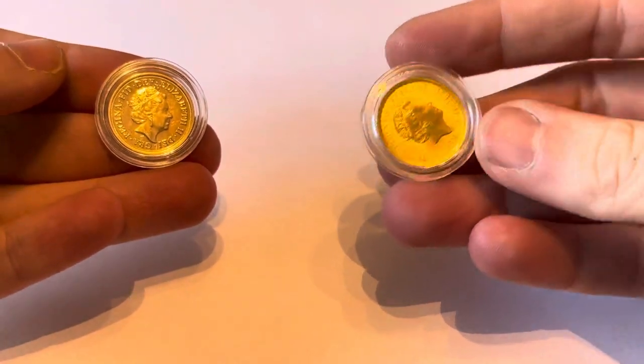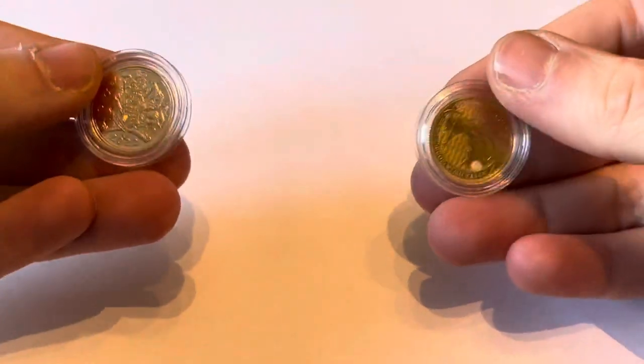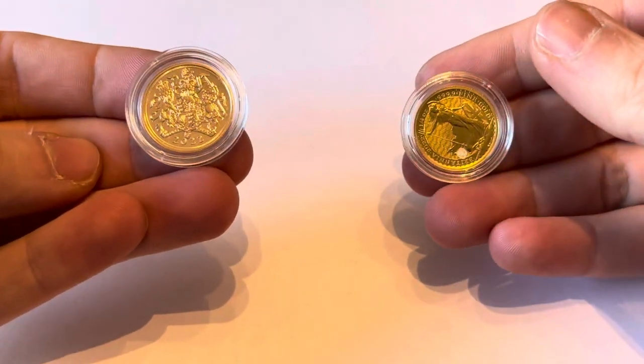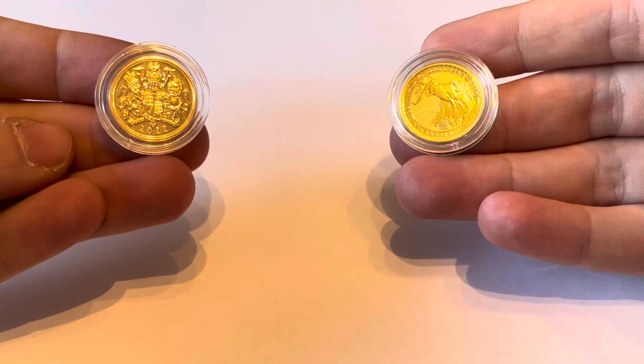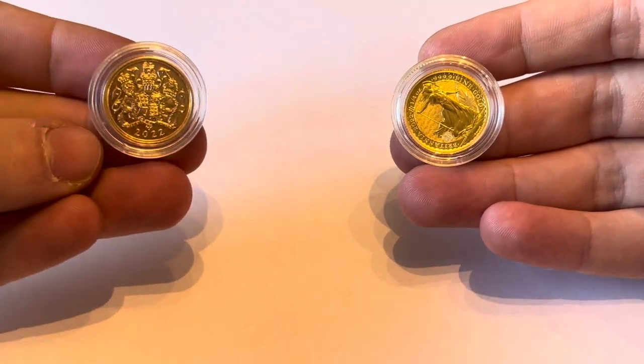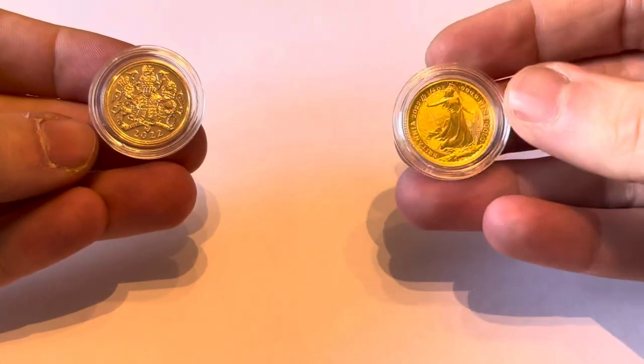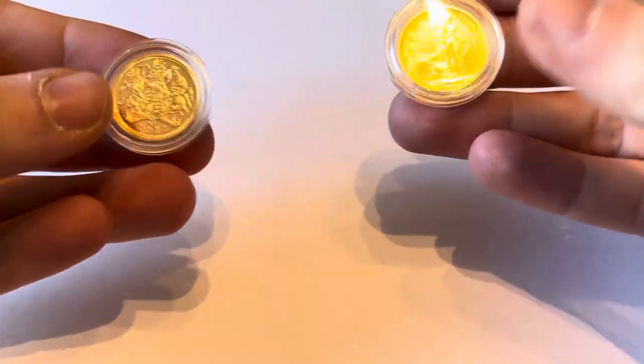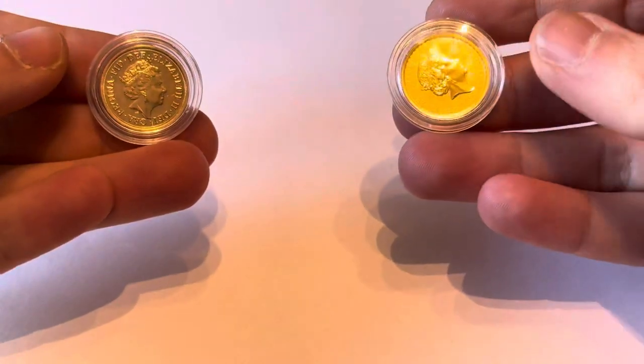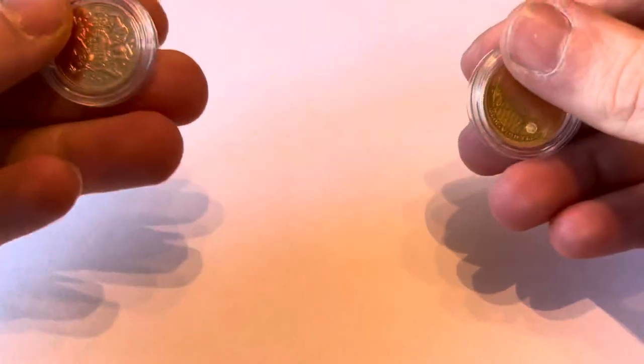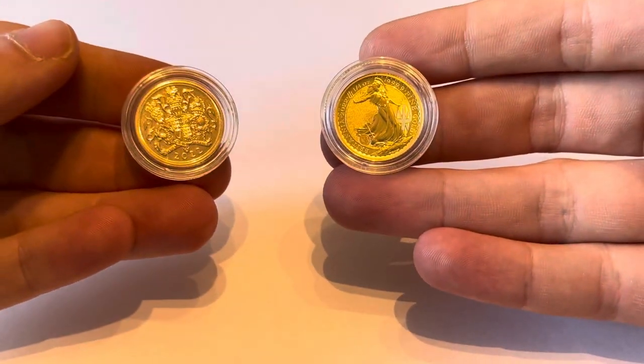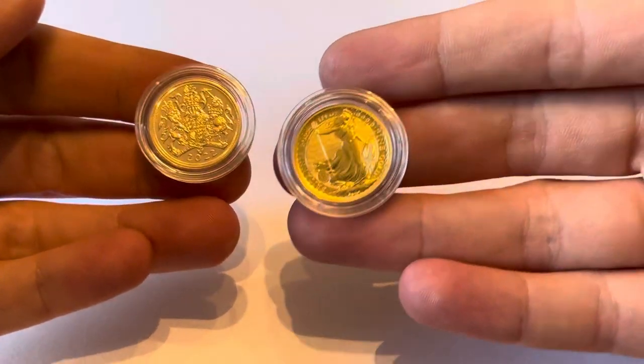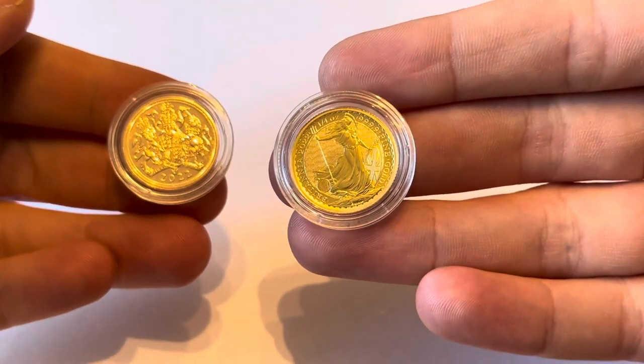The two coins I'm going to be using today to demonstrate my point are on the left here, this is a 2022 gold sovereign, which looks a little bit different to usual. I do have another video that goes into a bit more detail about why that is. It's all about the Platinum Jubilee and this is a special release for the Queen's Platinum Jubilee. And then on the right here we have a one quarter ounce Britannia. In terms of size, there's not that much in it. They're both quite similar size.